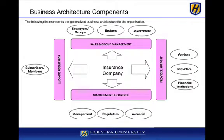This is an example of a business architecture diagram. We have the insurance company in the middle. The left-to-right axis represents a more operational type of flow, while the north-south or vertical axis is more of an ancillary or supporting type of functions. In the middle would be the core processing or adjudication, which is the main function of an insurance company.